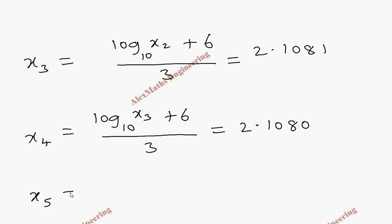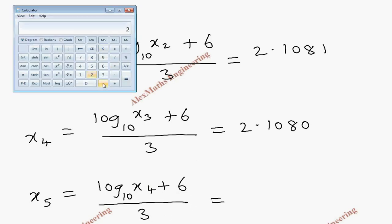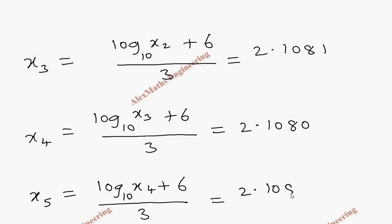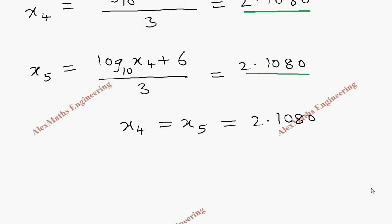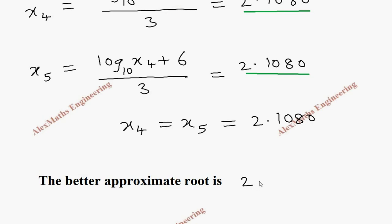Now x₅ is log of x₄ base 10 plus 6, whole divided by 3. We use 2.1080, compute log of that value plus 6 divided by 3, and get 2.1079, which again rounds to 2.1080. We got two consecutive values the same, so x₄ equals x₅ equals 2.1080. Therefore, the better approximate root is 2.1080, rounded to 4 decimal places.